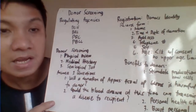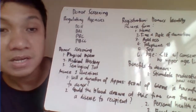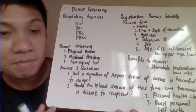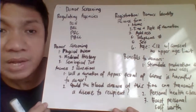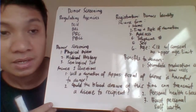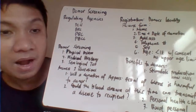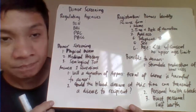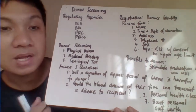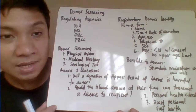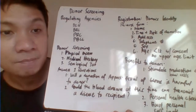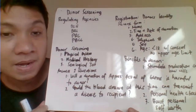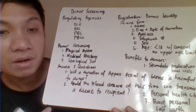We screen the blood donor effectively to protect the recipient and prevent transmission of blood-borne infections. Even though we test for infectious diseases like HIV, malaria, hepatitis B, hepatitis C, and syphilis, there's really no assurance that the patient has not been infected. Because when the patient donates blood that day, the patient may have already been infected but could still test negative on the serological test.